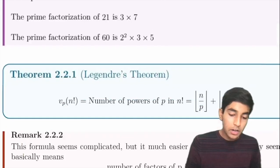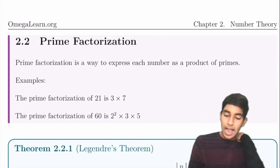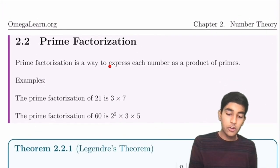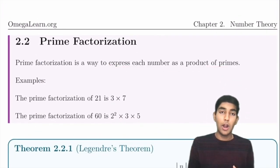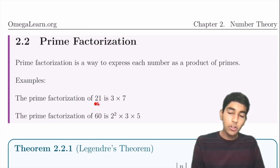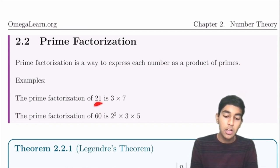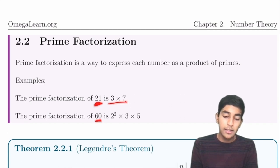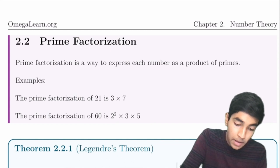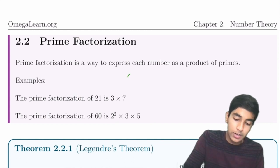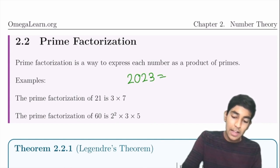Prime factorization expresses a number as a product of primes. For example, 21 = 3 × 7, and 60 = 2² × 3 × 5. It may be good to memorize 2023's prime factorization: 7 × 17².